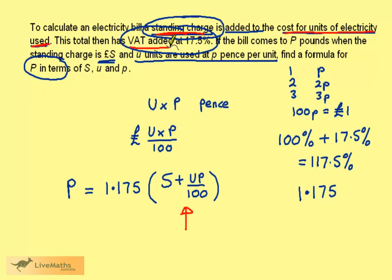Now let's look at adding the VAT. The multiplying 1.175, the 1, gives us the cost here inside the bracket, and the 0.175 adds on the VAT. So that gives us the total cost of the bill.